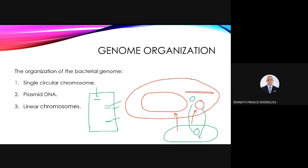When you have these gel resolution features — the genomic DNA band and three plasmid bands — you know there is at least one plasmid and that the DNA is sufficiently pure. Before proceeding to microbial genome sequencing, you must be aware of the features present in your bacterial genome. You can also look up these features using the NCBI GenBank as a reference.